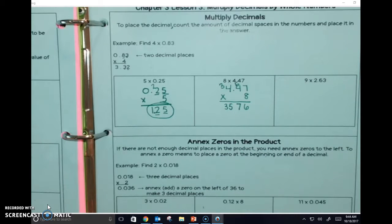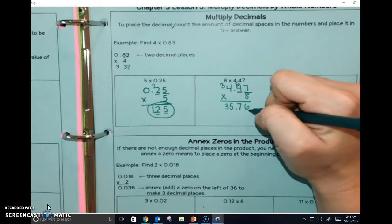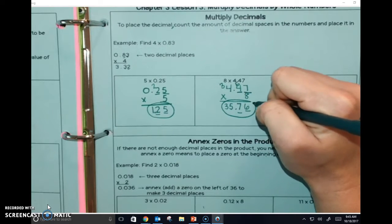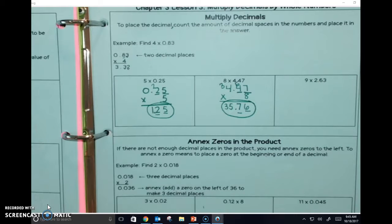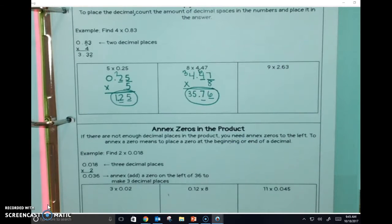So between what numbers am I going to put my decimal? 5 and 7. 5 and 7, because there's one, two up here, so we need one, two down here. How many people remember doing this in the last chapter? And then we have this last one.